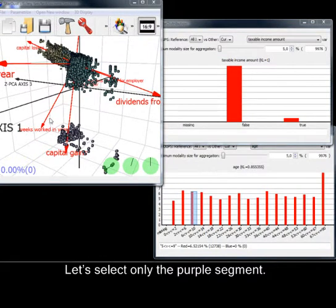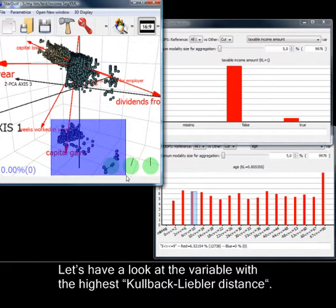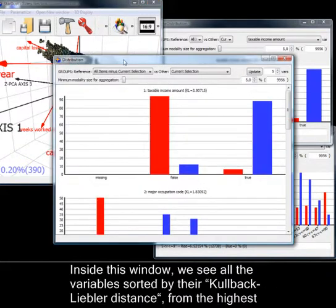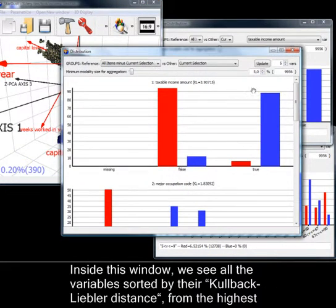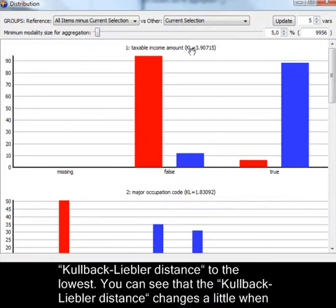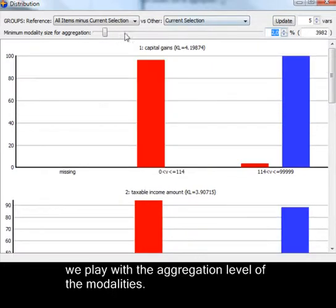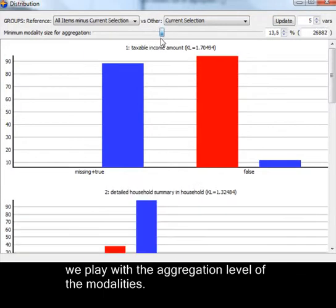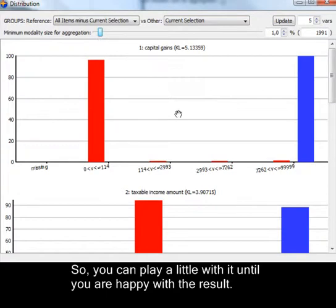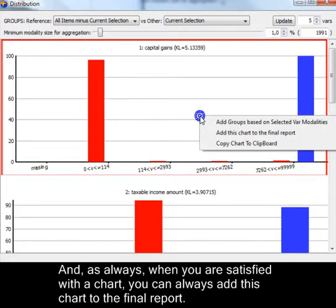Let's select only the purple segment. Let's have a look at the variable with the highest Kullback-Leibler distance. Inside this window, we see all the variables sorted by their Kullback-Leibler distance from the highest to the lowest. You can see that the Kullback-Leibler distance changes a little when we play with the aggregation level of the modalities. So, you can play a little with it until you are happy with the result. And, as always, when you are satisfied with the chart, you can always add this chart to the final report.